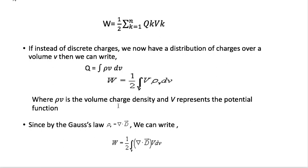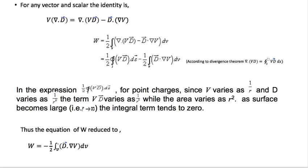By Gauss's law, the divergence of D-bar equals rho_v. Substituting this value of rho_v, the work done becomes one-half times the volume integration of (del dot D-bar)·v dv. We then apply the vector identity: v times (del dot D-bar) equals del dot (v·D-bar) minus D-bar dot (del v). Substituting this identity, work done equals one-half times the volume integration of [del dot (v·D-bar) minus D-bar dot (del v)] dv.